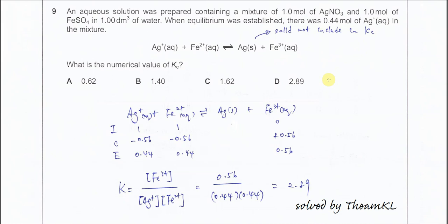Question 9. This reaction is between silver and iron. It started with 1 mole of silver nitrate and 1 mole of iron(II) sulfate.